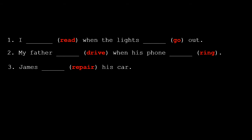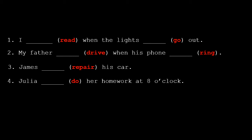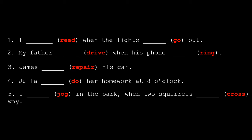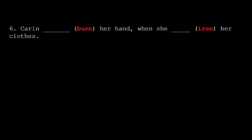Number 3: James [repair] his car. Number 4: Julia [do] her homework at 8 o'clock. Number 5: I [jog] in the park when two squirrels [cross] my way — jog and cross are the verbs. Number 6: Karen [burn] her hand when she [iron] her clothes — burn and iron are the verbs given in the brackets.